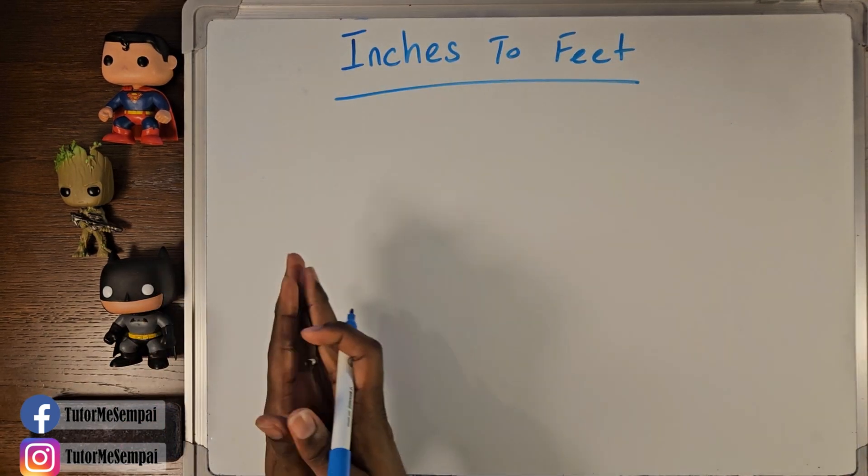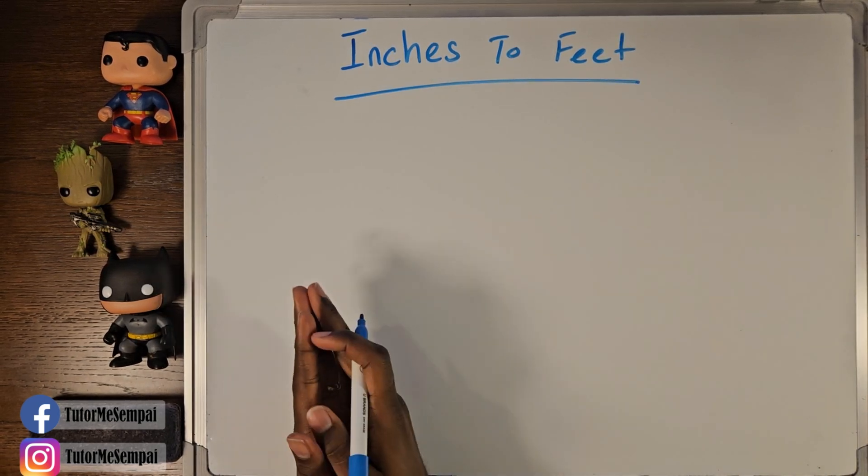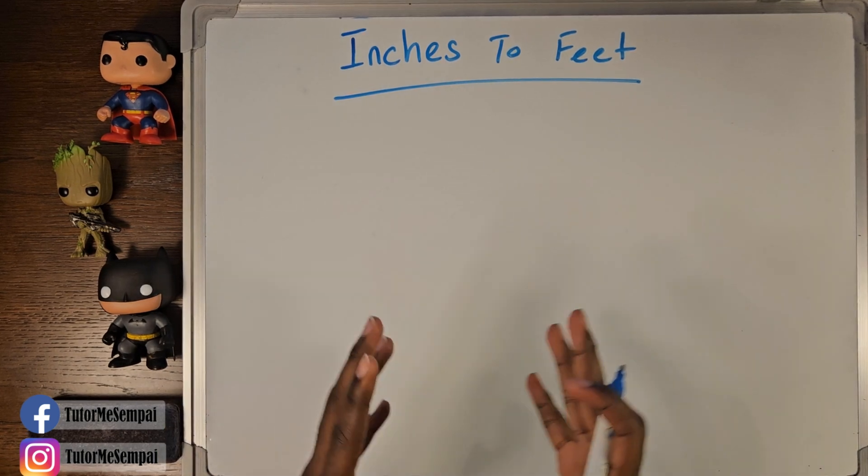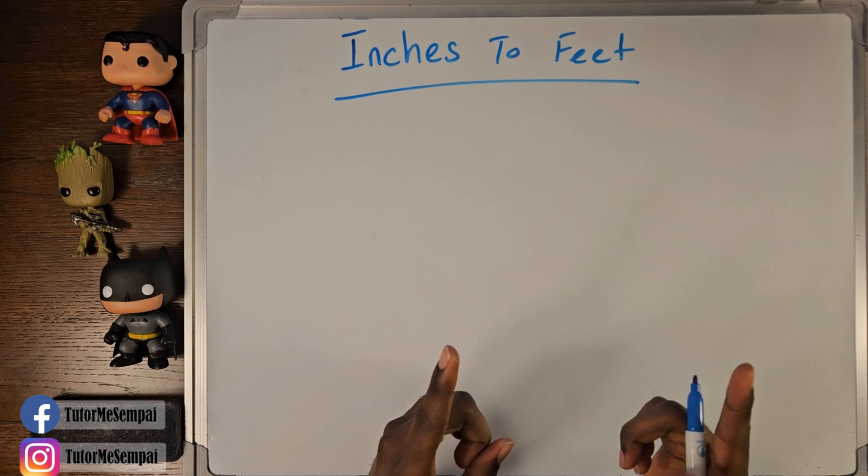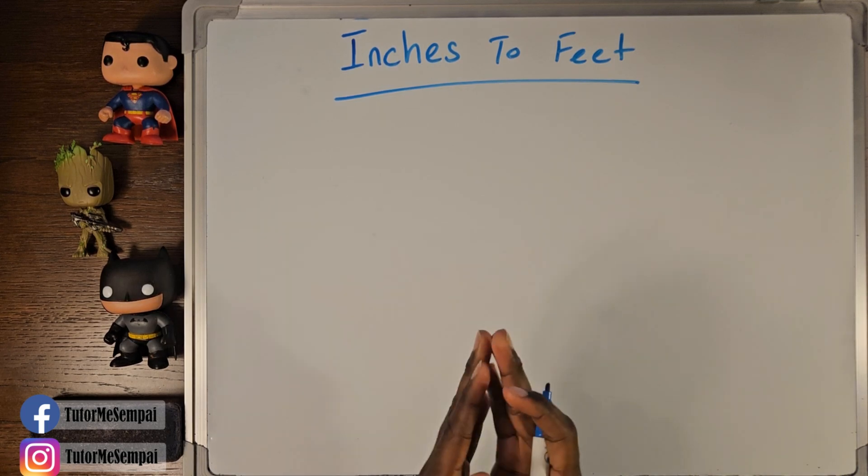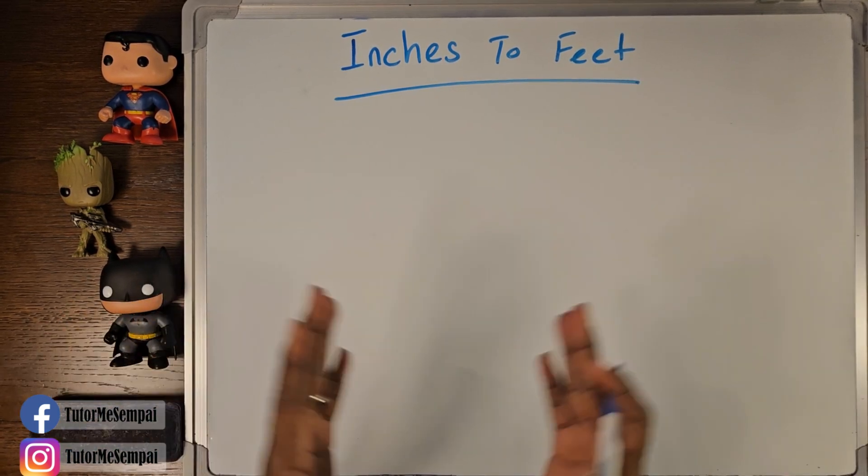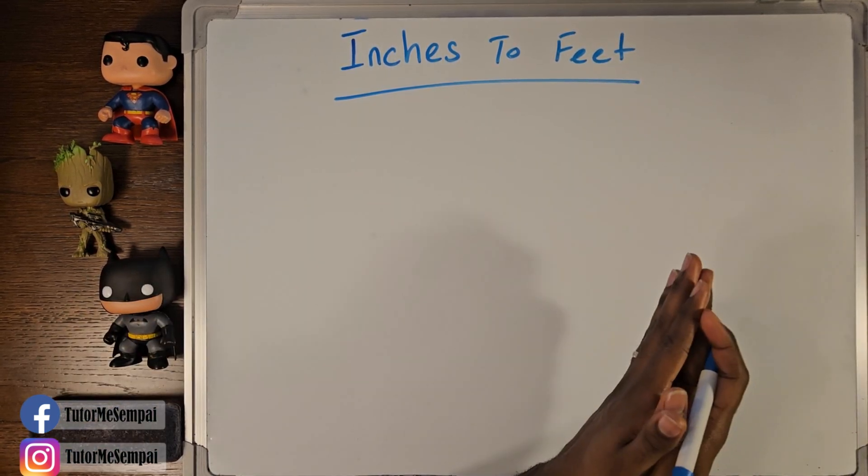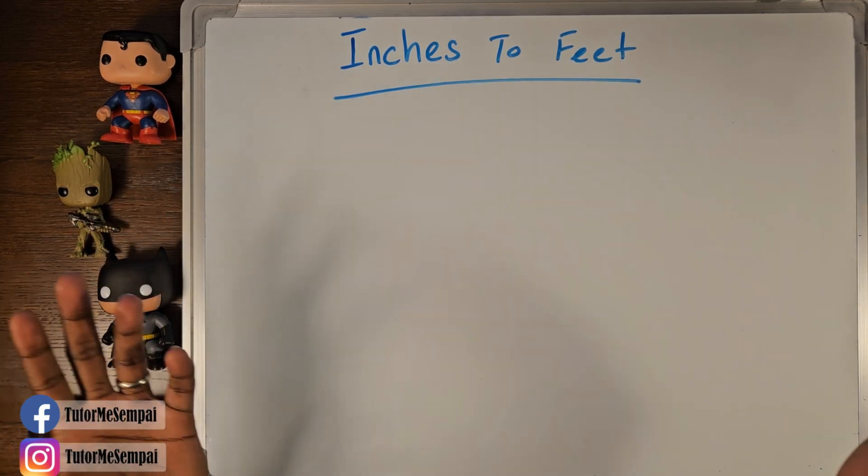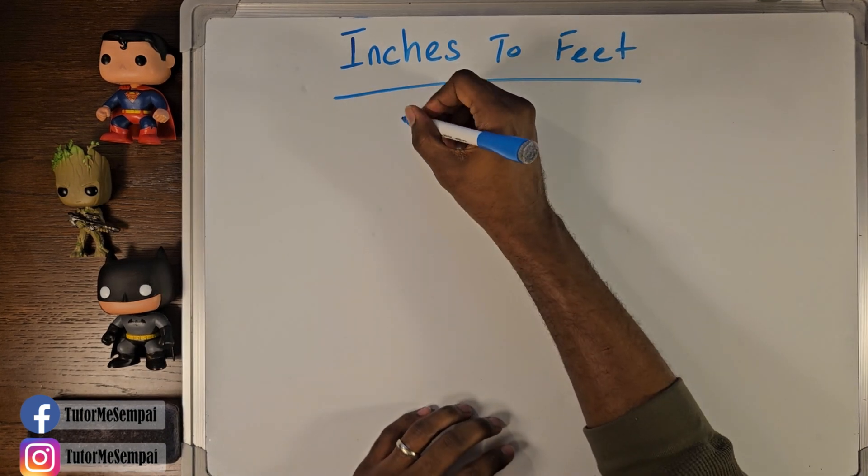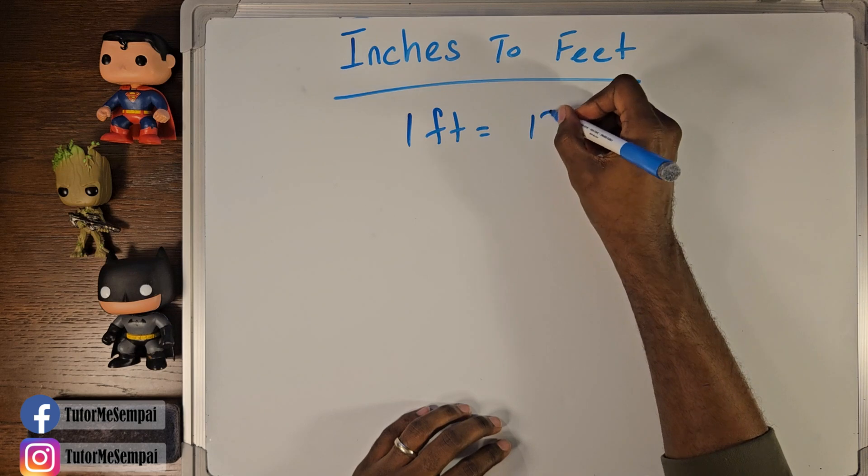So today we're going to be converting our inches to feet, and in fact, we're also going to go back from feet to inches. But before we get into all of that, which is actually going to be a rather simple process, there's one really important thing that we need to know, and that's going to be how many inches do we have in a foot. As long as we know how many inches are in a single foot, we can do all of our conversions from inches to feet and feet to inches. Now, this is going to be most likely given to you. So you have 1 foot equals 12 inches.